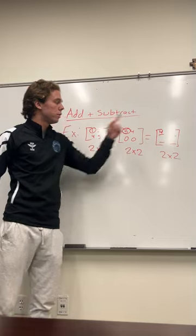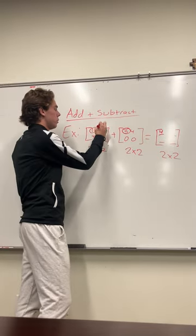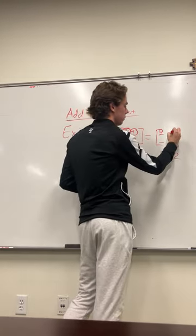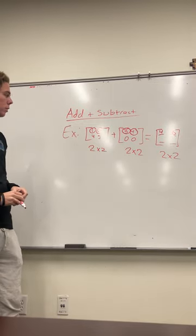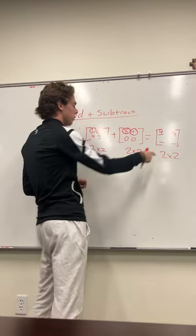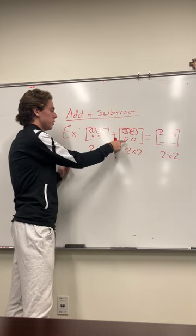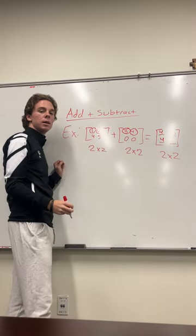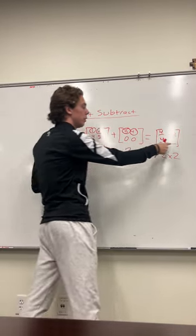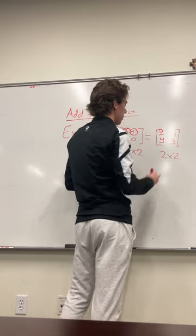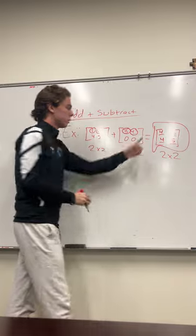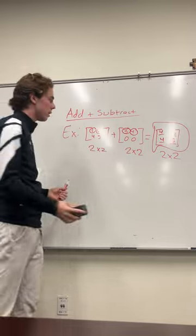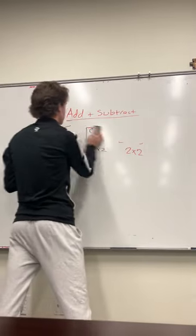For the next spot, you do the same thing for the other numbers. So 2 plus 4 is 6. For the next two: 4 plus 0 gives 4, and lastly 5 plus 0 gives 5. The resulting matrix is 4, 6, 4, 5. That is the basic way you go about adding two matrices together. Subtracting is the same way, except you're now subtracting instead of adding.